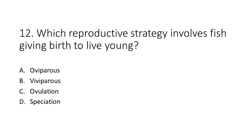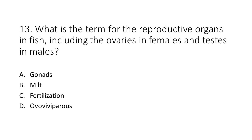Number 12. Which reproductive strategy involves fish giving birth to live young? a. Oviparous. b. Viviparous. c. Ovulation. d. Speciation.